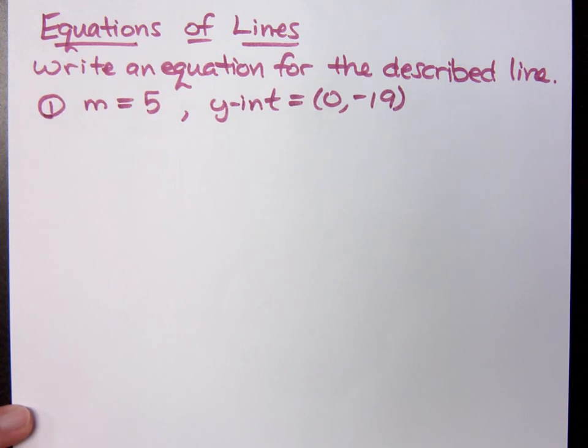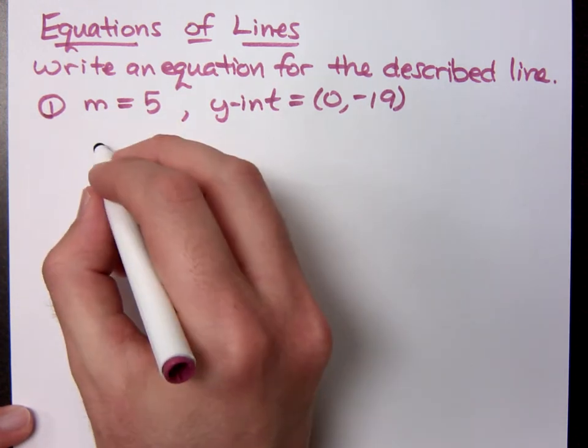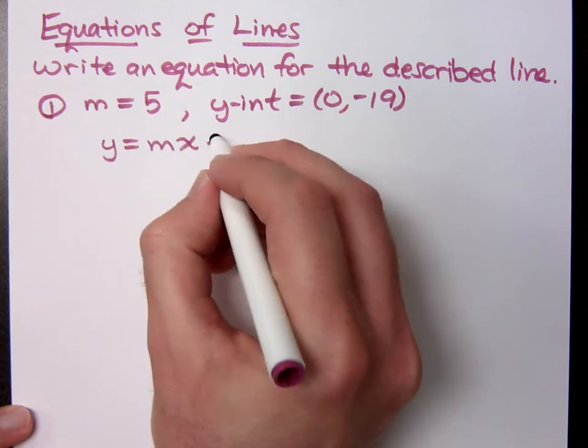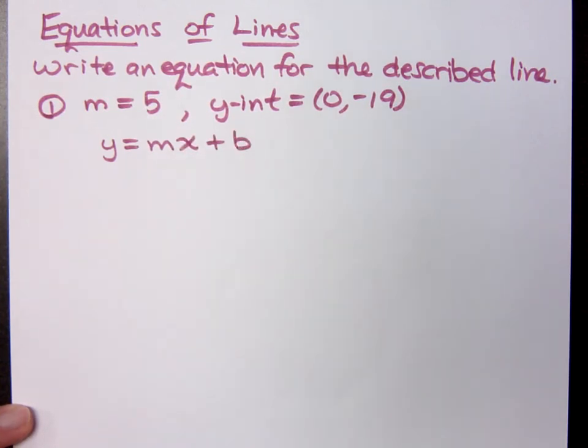one of the things that we know, one of the things that we remember, is the slope-intercept form, y equals mx plus b. So, basically what I've done here is I've given you the slope and the y-intercept. So, what would be the equation of that line?